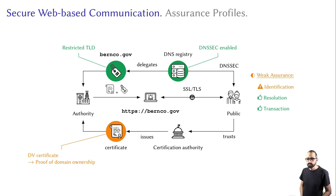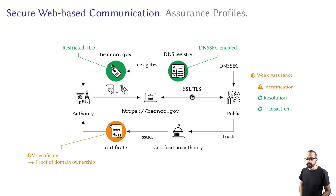Now, consider the same setting but with a DV certificate instead of an OV or EV certificate, as is the case for baronco.gov. The restricted TLD still indicates a governmental website, but you would not know with whom exactly you are communicating, since you need extra information to find that out. We argue that identification is ambiguous, and as such we consider this setting to have a weak assurance profile.